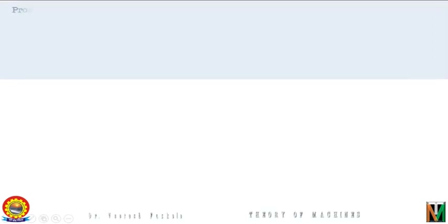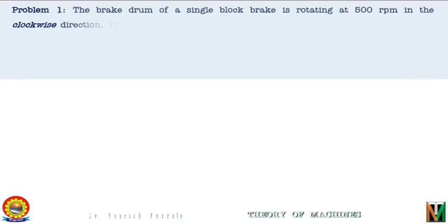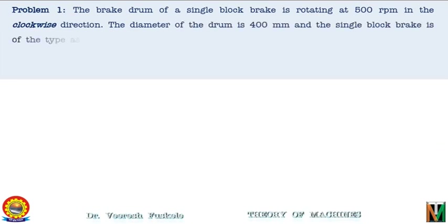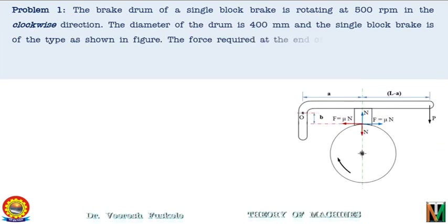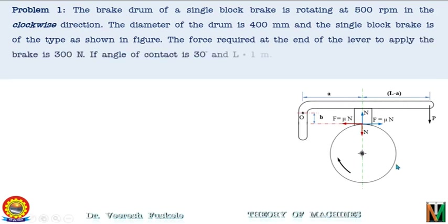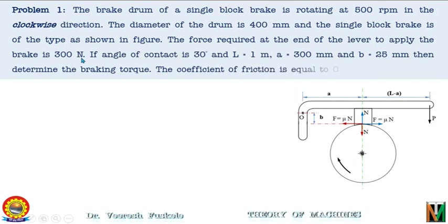Having derived all the equations, let's now proceed to numerical problems. Problem 1: The brake drum of a single block brake is rotating at 500 rpm in the clockwise direction. The diameter of the drum is 400 mm. The force required at the end of the lever to apply the brake is 300 N. The angle of contact is 30°, L = 1 m, A = 300 mm, B = 25 mm. Determine the braking torque. The coefficient of friction is 0.3.